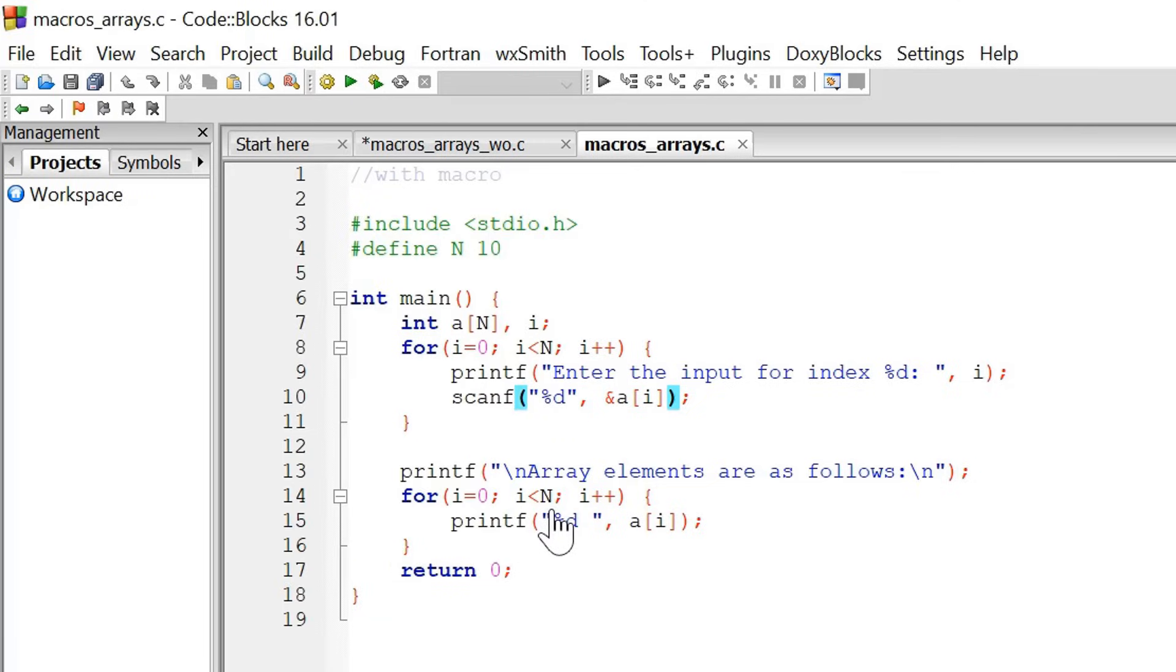Now suppose in future, I want my user to enter 15 elements in this array. The length of this array must be at least 15. Therefore, I just have to make a small change over here. I am going to change this to 15. Just making a change over here will automatically make changes over here.